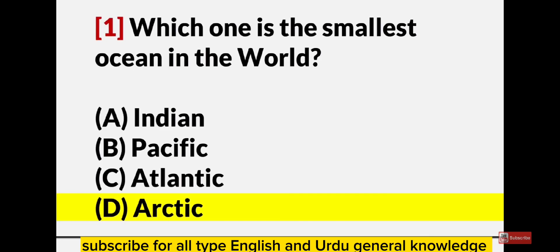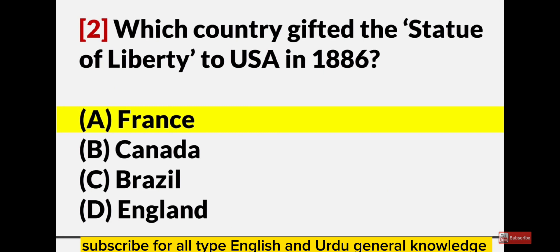Which one is the smallest ocean in the world? Arctic. Which country gifted the Statue of Liberty to the USA in 1886? France.